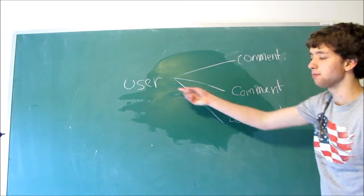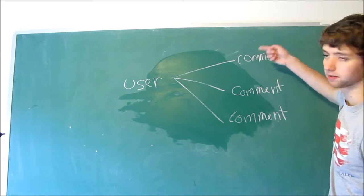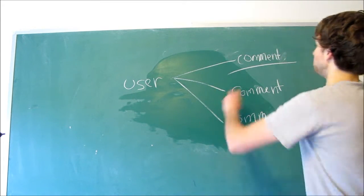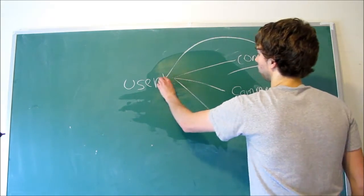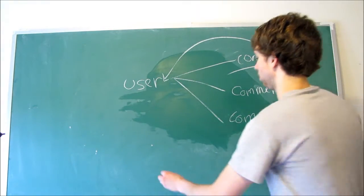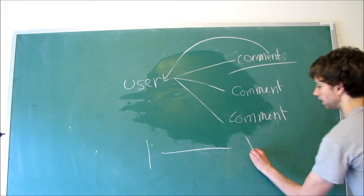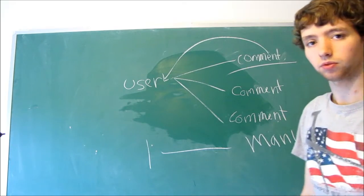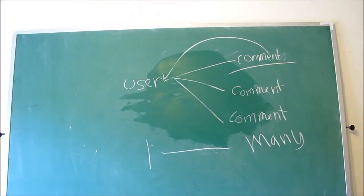You can see that the user is able to make multiple comments, but each individual comment, like this one for example, is only owned by one user. That is a one-to-many relationship, or one colon many. Can you see that? Yeah, I think you can.